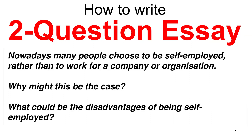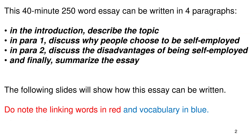Today we are going to be discussing the Cambridge IELTS Academic Book 14, Test 4, Writing Task 2 — a two-question essay. The question is: 'Nowadays, many people choose to be self-employed rather than to work for a company or organization. Why might this be the case, and what could be the disadvantages of being self-employed?' This 40-minute, 250-word essay can be written in four paragraphs.